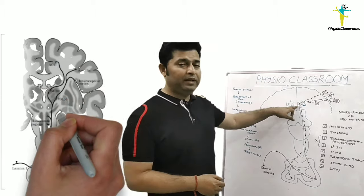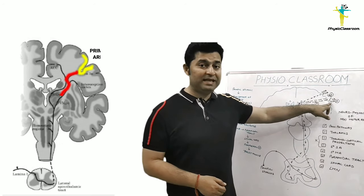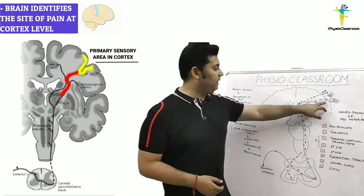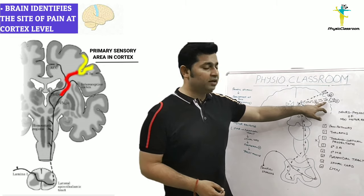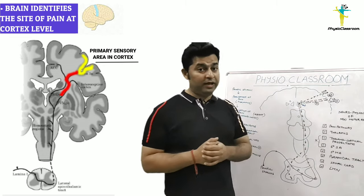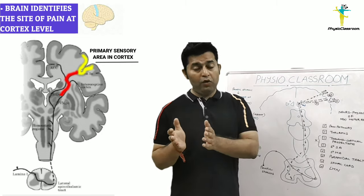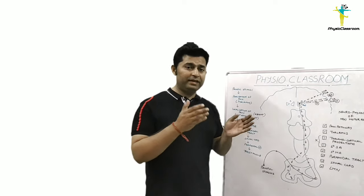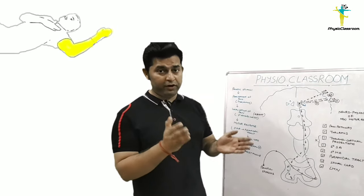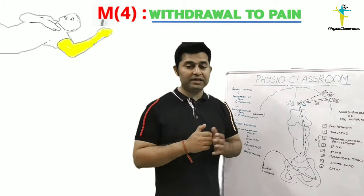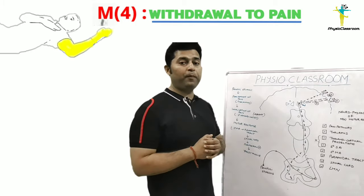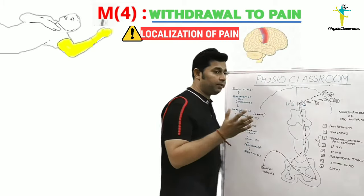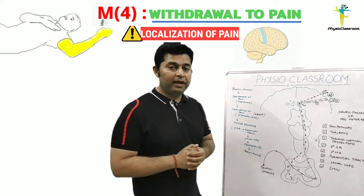Ideally, this painful stimulus should next be carried up to the level of the primary sensory area via the thalamocortical projections. As mentioned in my previous video, it is only after the stimuli reaches the parietal cortex that the brain becomes aware about the site or localization of the pain. However, in the M4 motor response, we have a withdrawal response rather than a localization response, so we can conclude that the primary sensory cortex is not able to localize the pain.